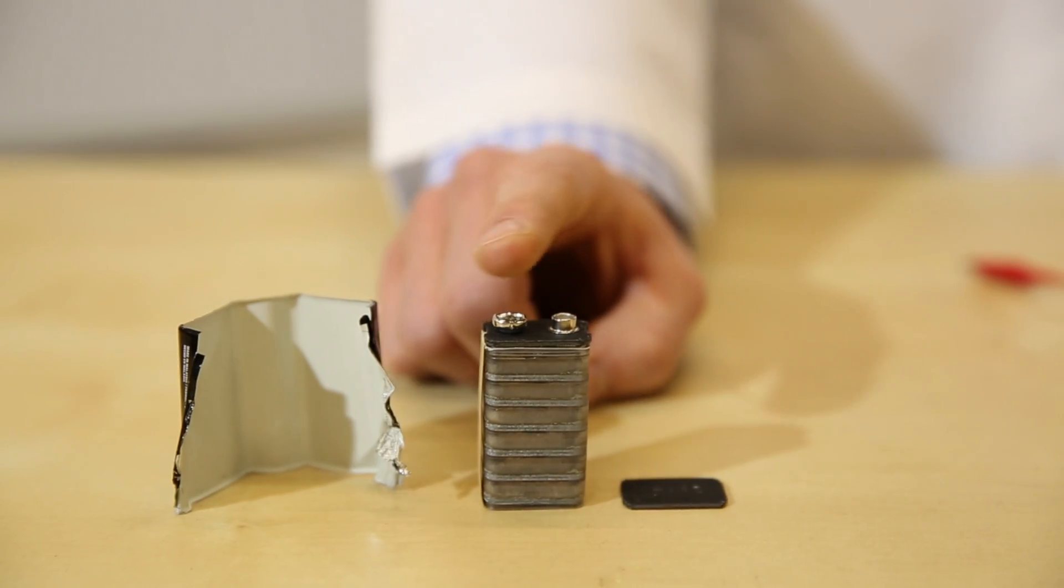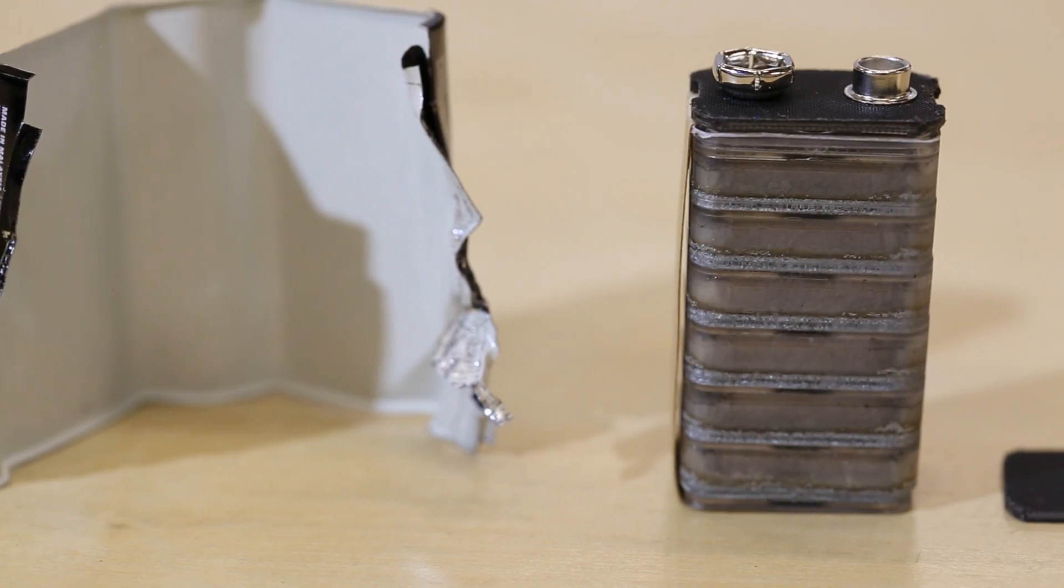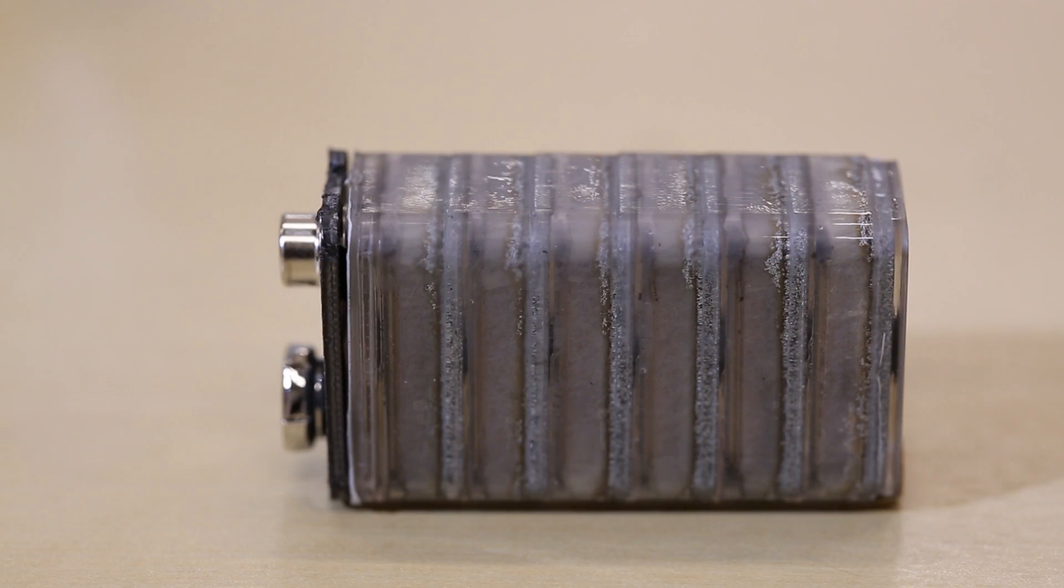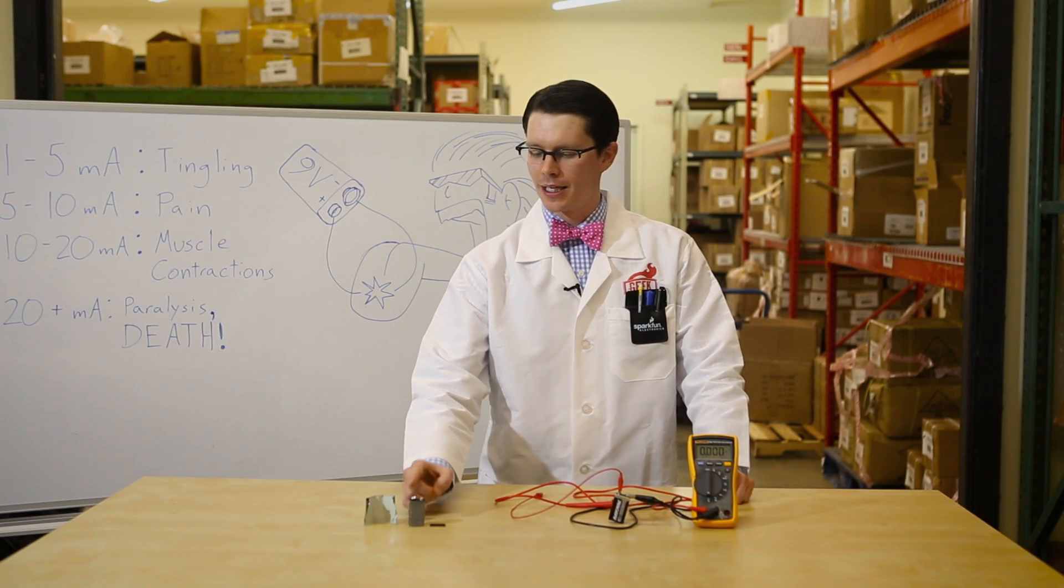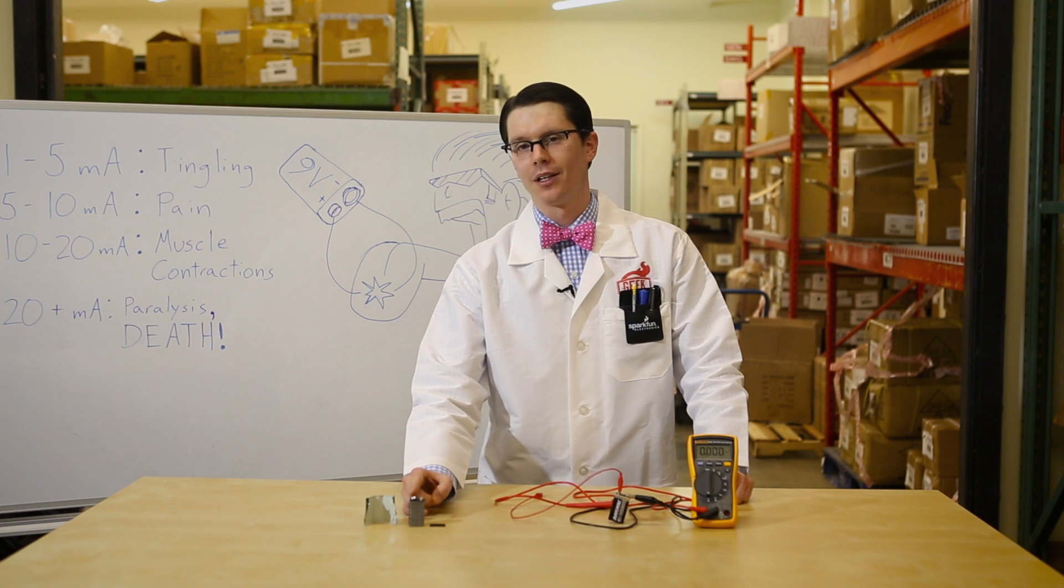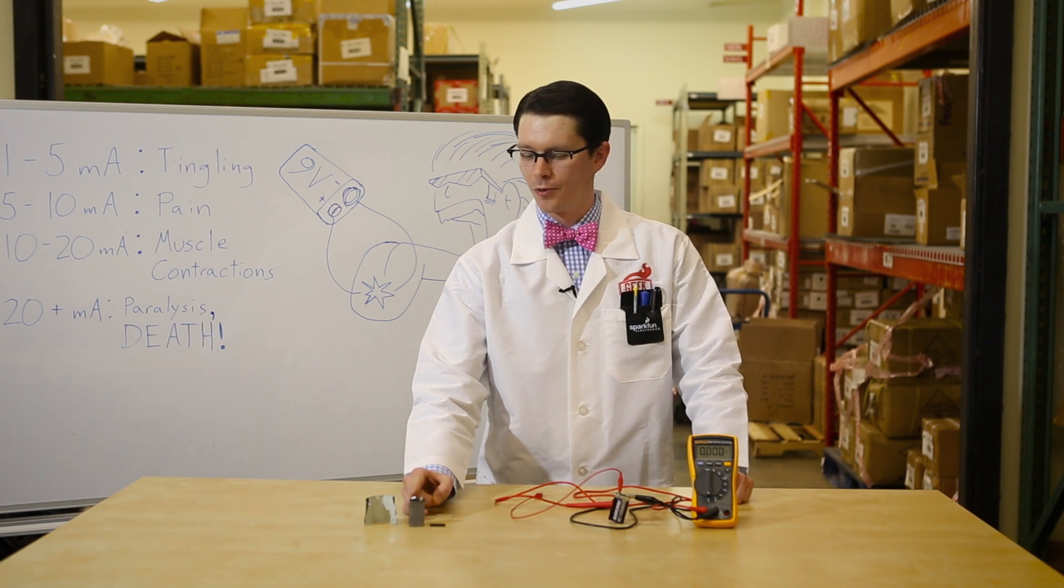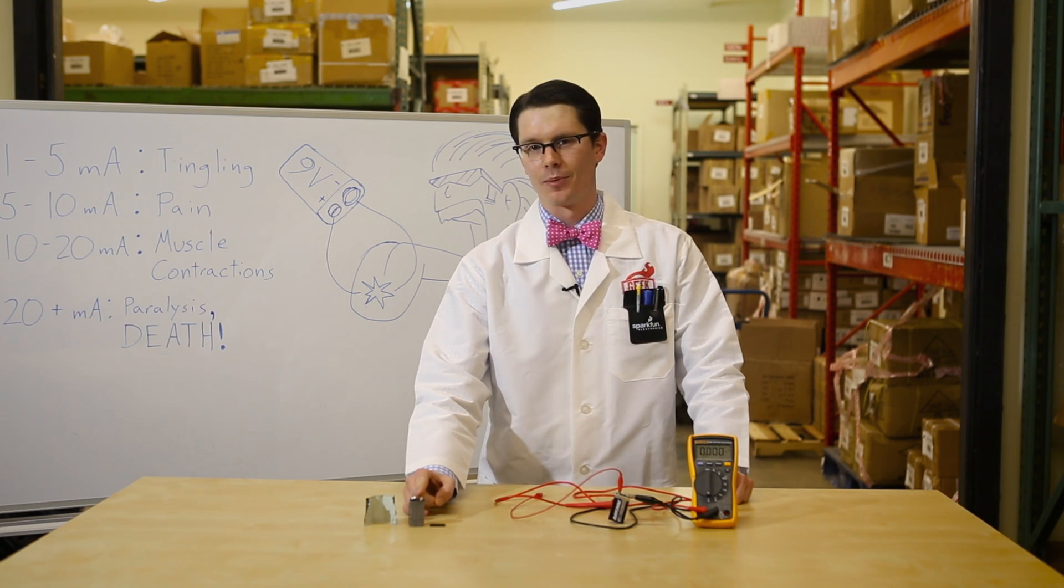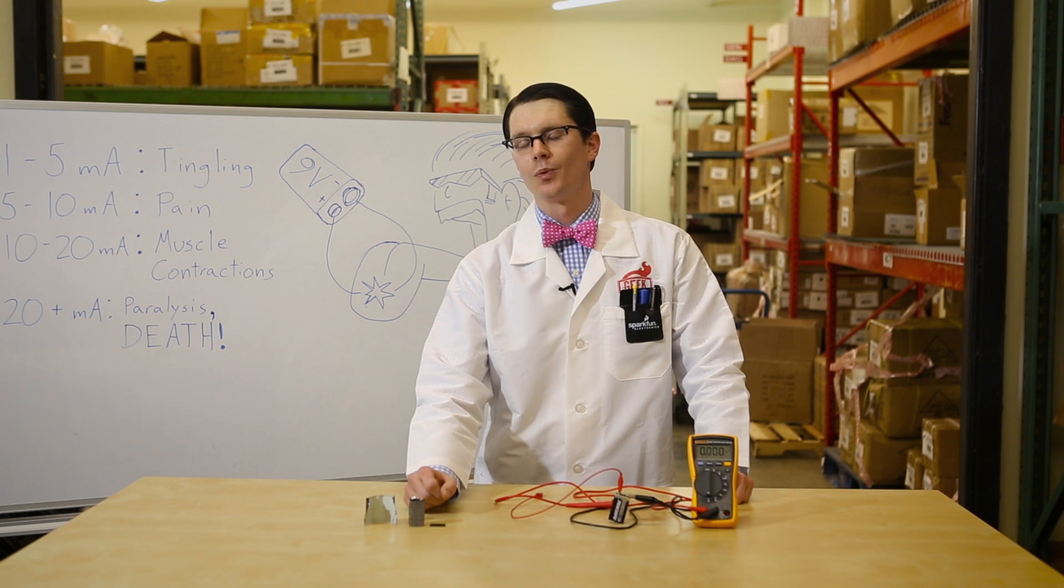If you tear apart a 9-volt battery, you'll see that the inside is just a collection of six 1.5-cell batteries. Those are all wired in series so that the output is 9 volts. If you put something conductive between the minus terminal and the positive terminal, it creates an electric circuit where electrons flow from the minus terminal to the positive terminal, thus completing the chemical reaction within the cells.